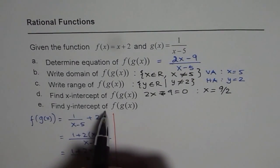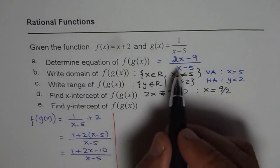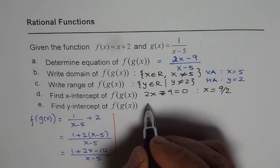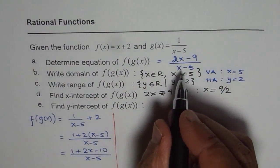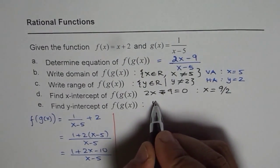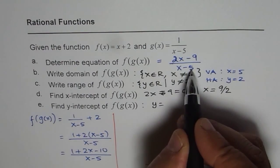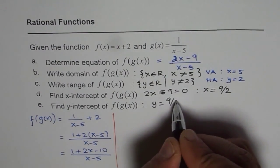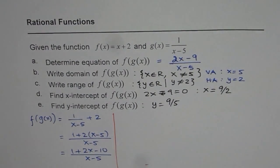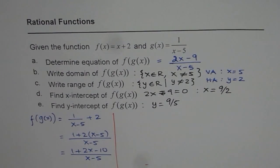How about the y-intercept? y-intercept is when x is equal to 0. So the y-intercept will be at y equals, if I write x as 0, I get minus 9 over minus 5 or 9 over 5. So that is how I get these values.